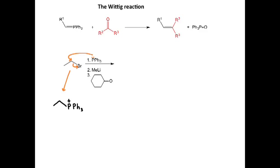Now we look at the reagent in step two. In step two, we're adding methyl lithium, and methyl lithium is really acting as a very strong base. Some other bases you could use — sometimes people might use butyllithium, and that's a pretty common base you could use as well.